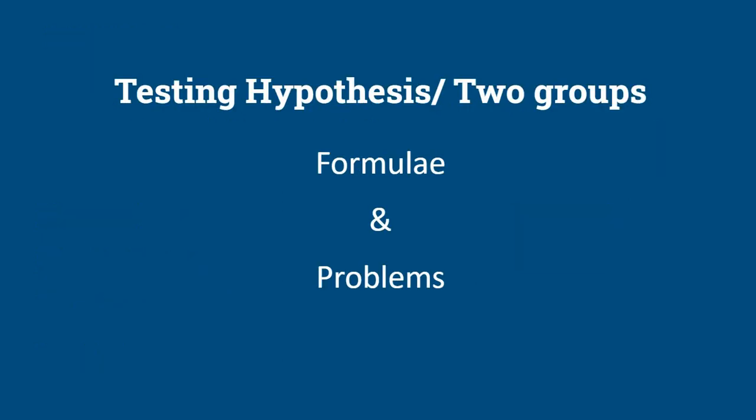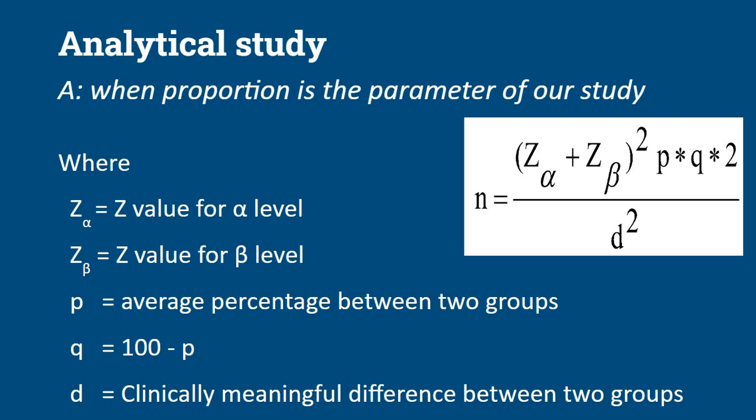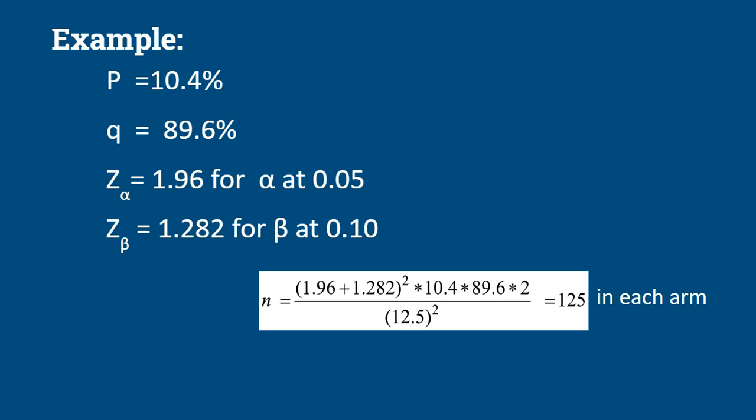Now moving to the next two scenarios: when we are going to compare two groups for proportion and means. When proportion is the parameter, the formula is N = (Z_alpha + Z_beta)² × P × Q × 2 / D², where P is the average percentage between two groups, Q is 100 minus P, and D is the clinically meaningful difference between the two groups. In the example, combined prevalence is 10.4%, so Q is 89.6%, z-alpha is 1.96, and z-beta is 1.282 for beta error at 0.10. Substituting these values yields 125 in each arm.